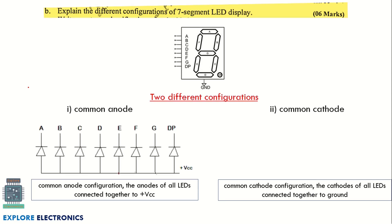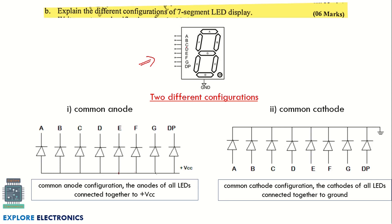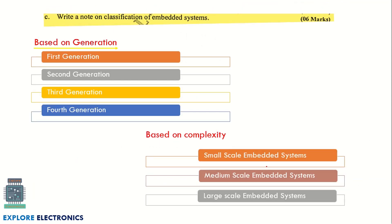The next question asks you to explain different configurations of the seven-segment LED display. The display has segments A, B, C, D, E, F, G representing the LEDs, and a DP for the decimal point. The two configurations are common anode and common cathode. In common anode, all anodes are connected to VCC and a logic zero is applied at the cathode to turn on an LED. In common cathode, the cathodes are connected to ground and a logic one at the anode turns the LED on.